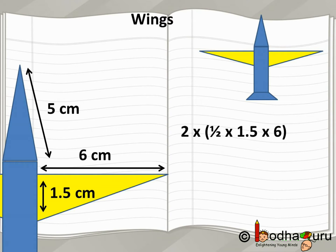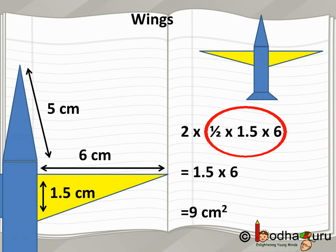If you see, the wings on either side of the nose are the same or similar, and they are right triangles with base equal to 1.5 cm and height is 6 cm. Area of such two triangles is twice of half of base multiplied by height as they are right triangles.